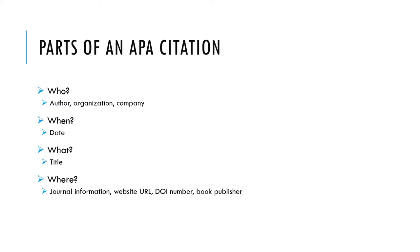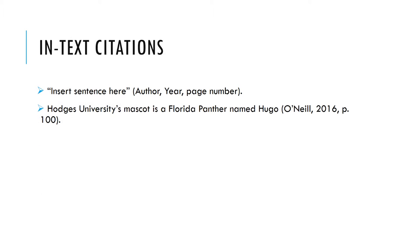That's it! If this still seems confusing, I'll show you some examples. In-text citations are the easy part. These go at the end of a quote or paraphrase in the body of your paper. These always include the author's last name, the year, and, if available, the page number.